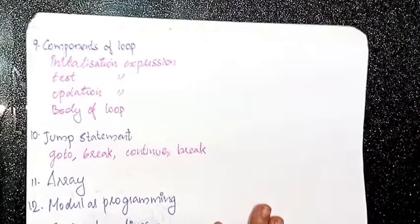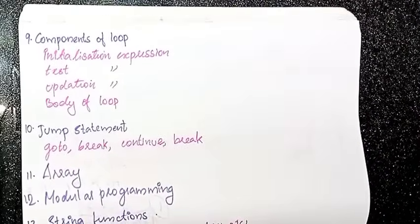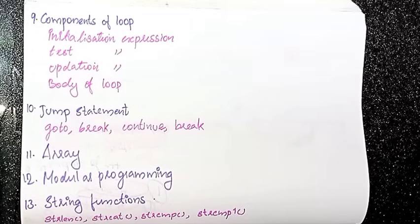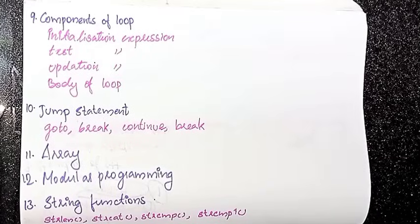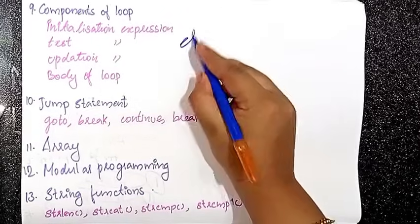The next topic is components of a loop. The components of a loop are: the initialization expression, test expression, update expression, and body of the loop. That is all you need for the elements of a loop.